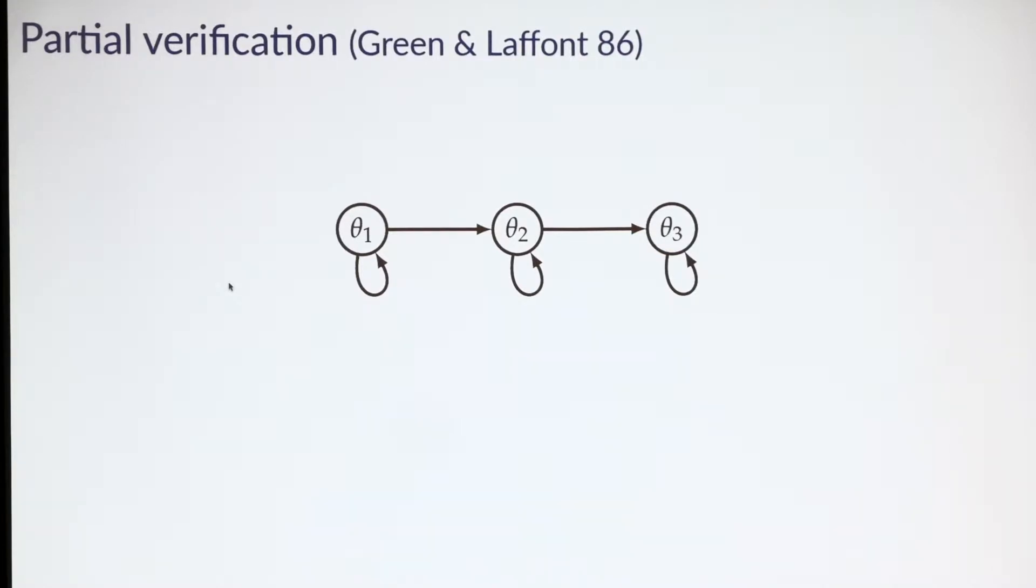Each edge of the graph goes from a type to a feasible report. Type 2 can report as type 2 or type 3. Type 3 can only report type 3. Let's consider a very simple problem where the principal is deciding whether to allocate a good to an agent who has one of these three types.